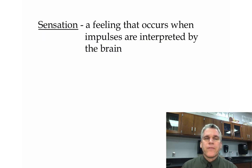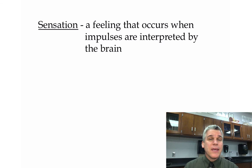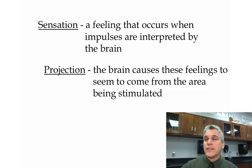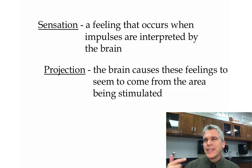A sensation is a feeling that occurs when impulses are interpreted by the brain. Everything we can feel, smell, taste, hear, and see is going to the brain where it's being processed. In many cases, once the brain interprets that information, it sends it back out to where it came from — this is known as projection. The brain causes feelings to seem to come from the area being stimulated. For example, mechanoreceptors in your fingertips send impulses to your brain, your brain interprets that, and then sends it back out to your fingertips — so you're really feeling it in the fingertips, but interpreting it in your brain.